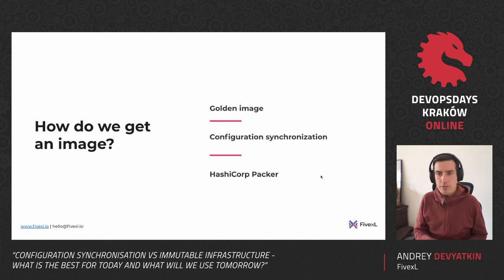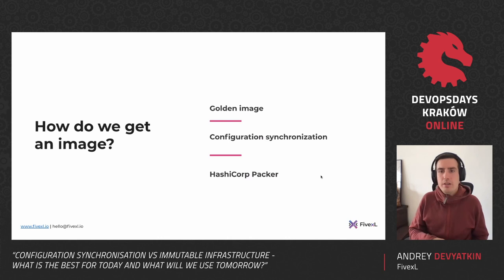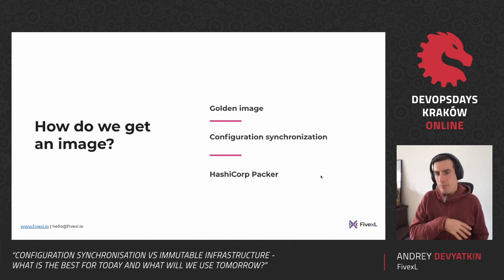How do you get those images? The easiest way is a golden image — just boot a virtual machine, do some configuration, save the image, and you have a new base image. If you need to change it, boot it up, change by hand, save it. You could run your configuration synchronization tools and save it. Or you can run HashiCorp Packer, which automates the whole procedure: boots up the virtual machine, does all the changes you need, then saves that as a new virtual machine image for you to use.